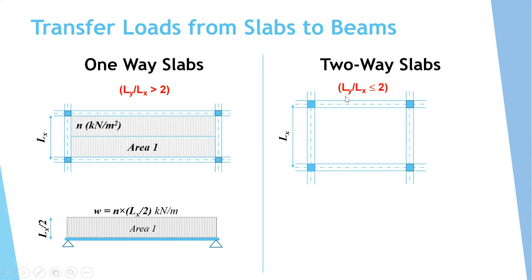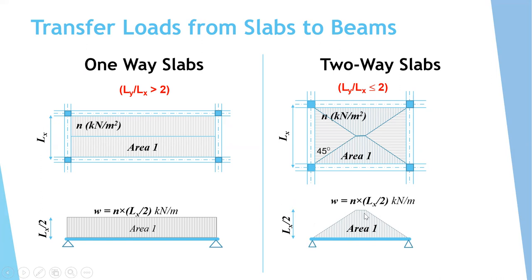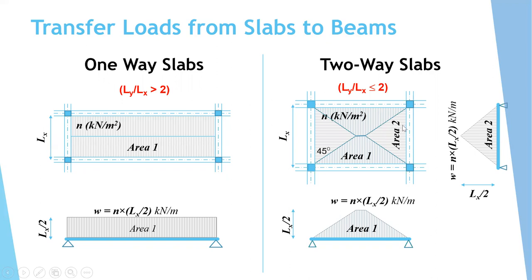For two-way slabs, Ly over Lx is less than or equal to two. In this case, the slab is divided into two triangles and two trapezoidal areas at 45°. The trapezoids are loaded on the long beams and the triangles on the short beams. To get the load as a concentrated force, multiply the area by the ultimate slab load. For uniform load, multiply n by the height Lx/2, giving kN/m. The same approach applies for the triangle load case using area 2.